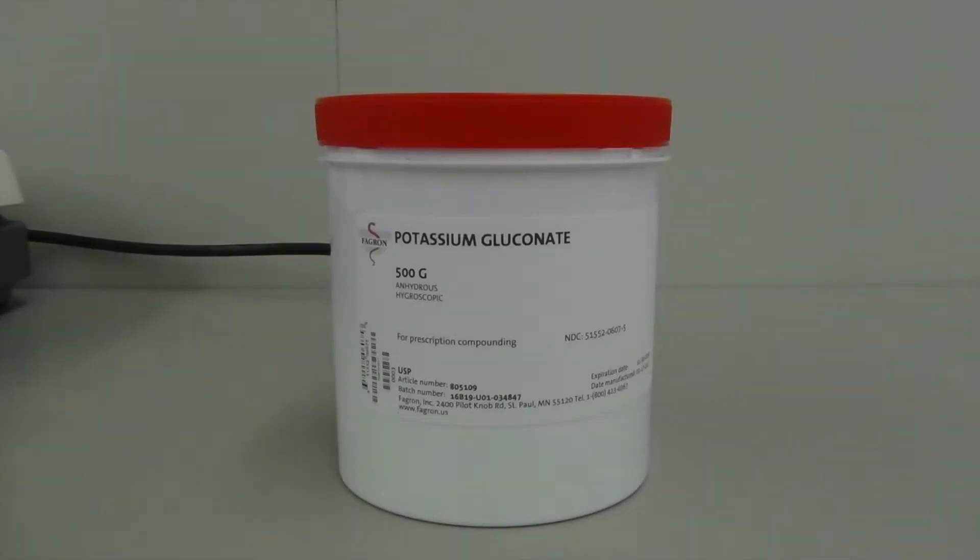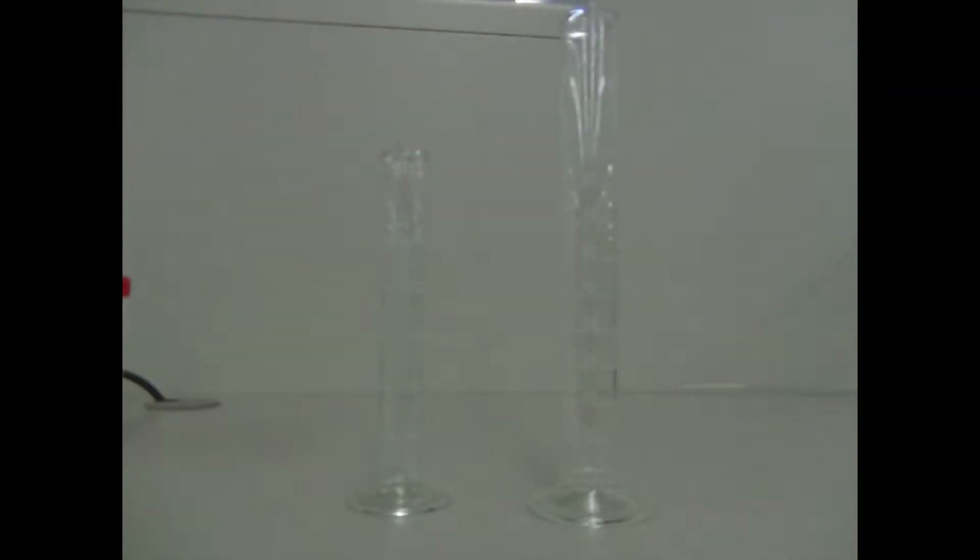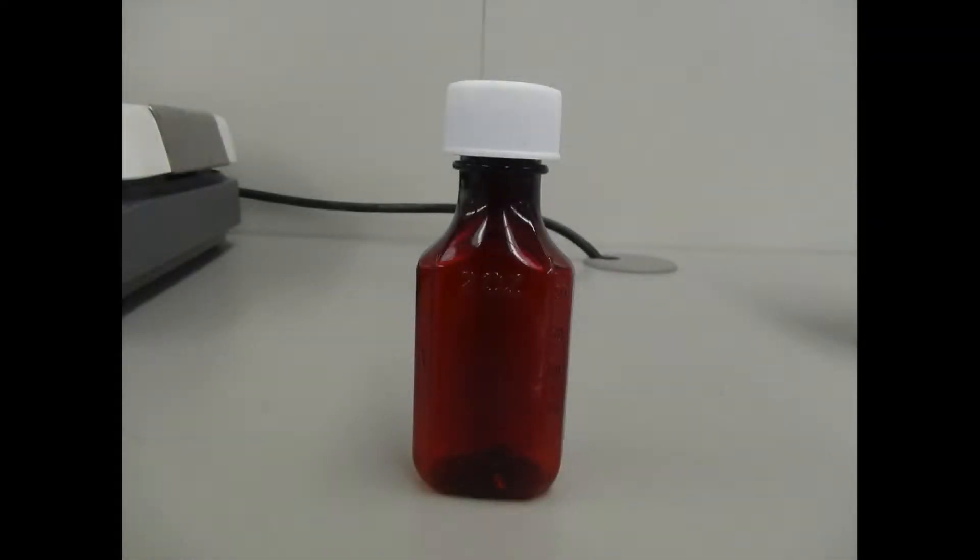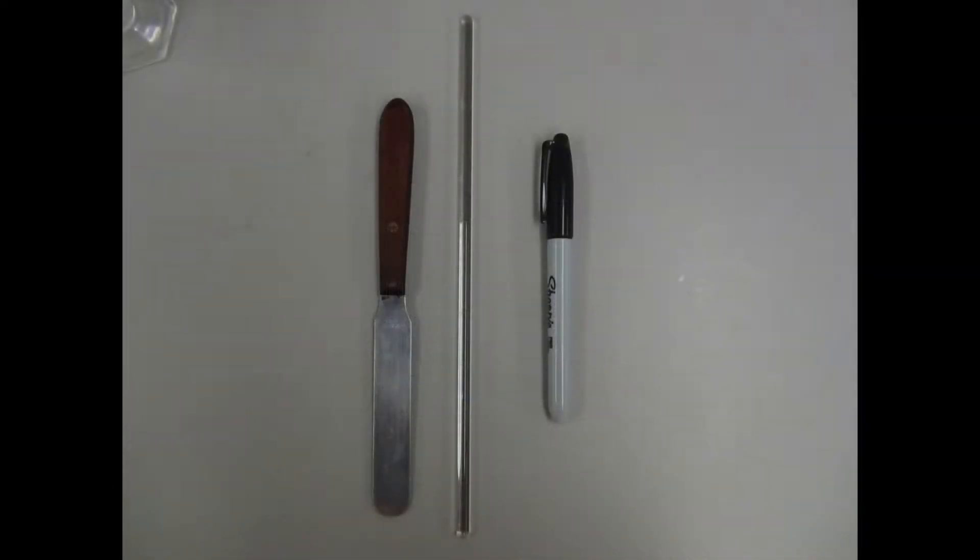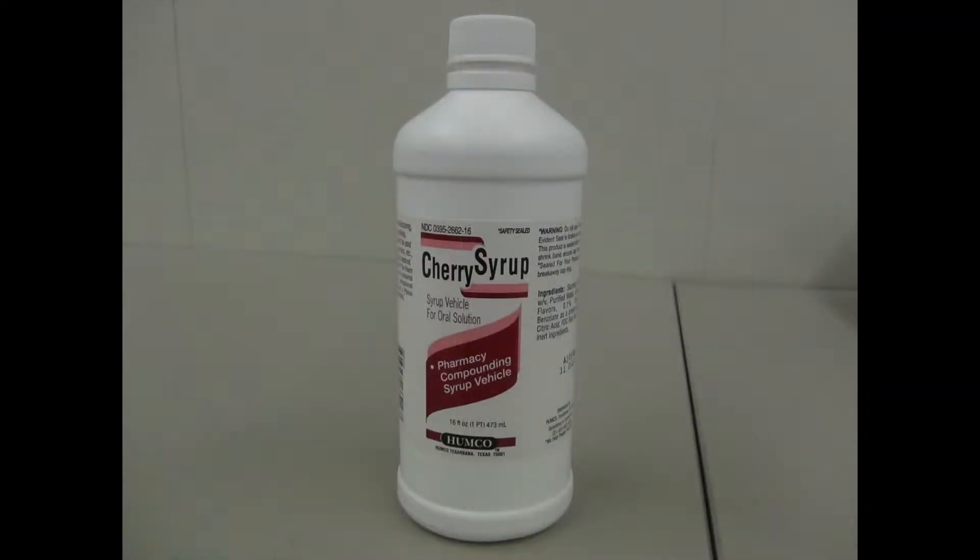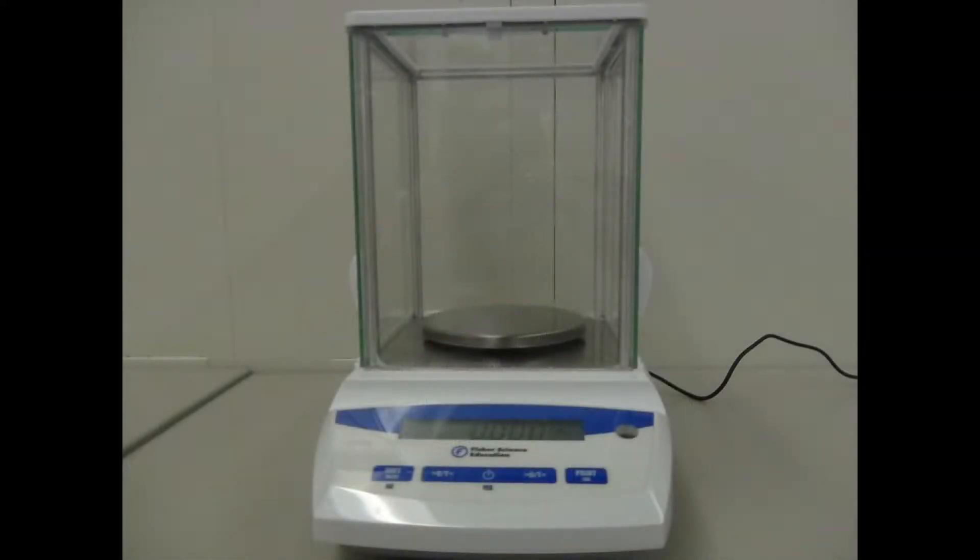The first thing you are going to want to do is gather all of your materials. For this prep, you are going to need the potassium gluconate drug, two graduated cylinders, a conical graduated cylinder, a two-ounce amber bottle, weighing papers, a spatula, stirring rod, black sharpie, cherry syrup, and an electronic balance.